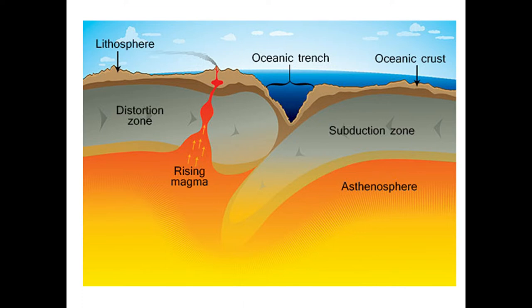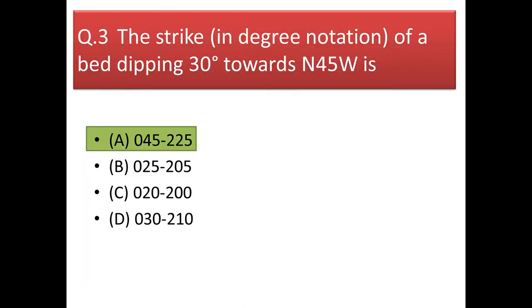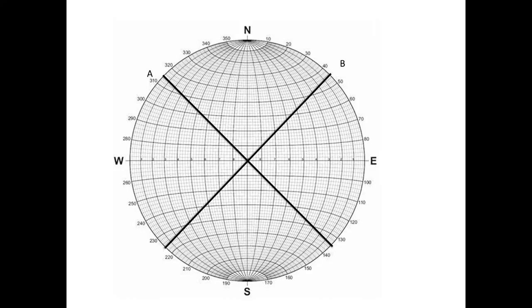As a result, a depression is formed on the surface and this depression is called a trench. Next question: the strike of a bed dipping 30 degrees towards north 45 degrees west is? We have a bed dipping 30 degrees towards north 45 degrees west.